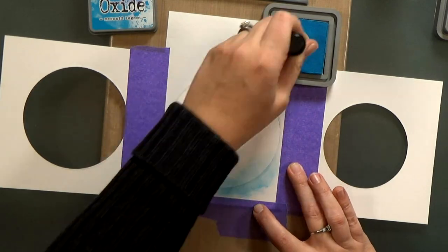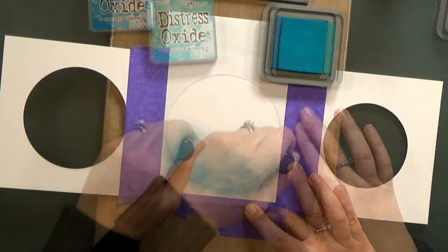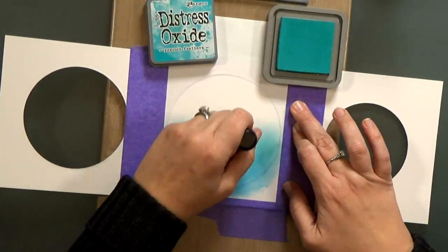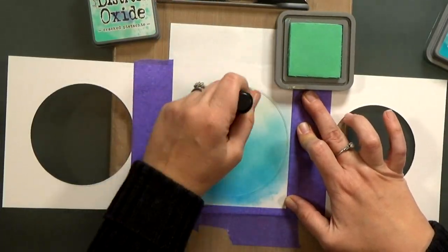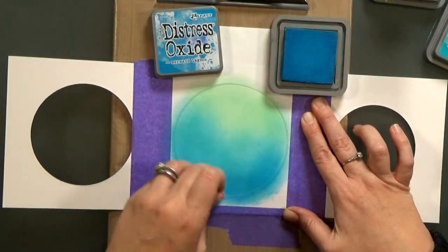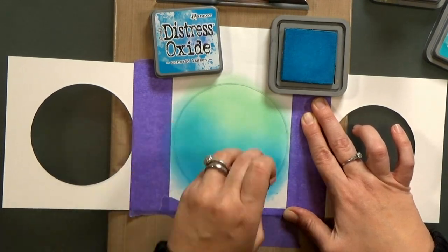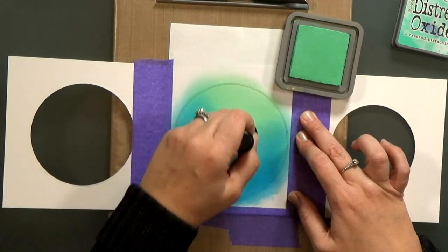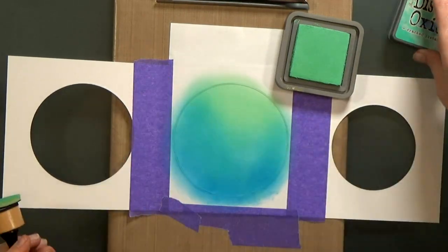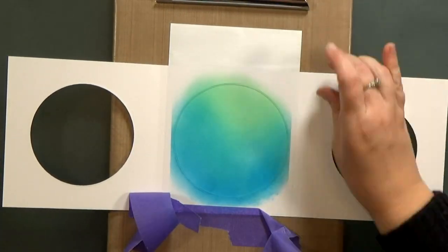And then I'm going to ink blend with my distress oxide inks. I've got mermaid lagoon, peacock feathers and cracked pistachio and I'm going to go over the area twice for full coverage. I really like these distress oxide inks and you can even stamp with them on like regular distress inks.